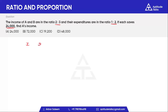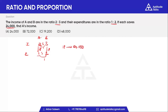Income ratio is 2 to 3. 1 part equals a certain value, and 24,000 is our answer.